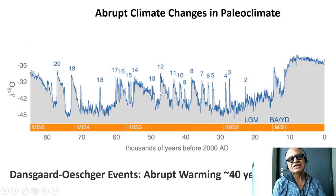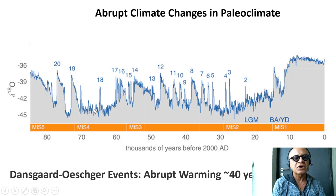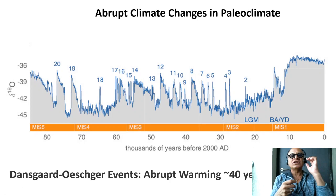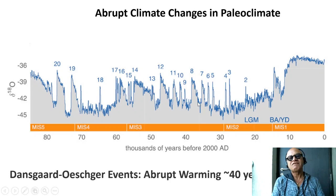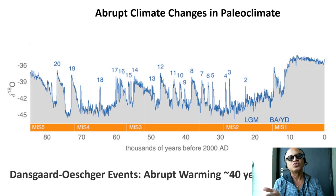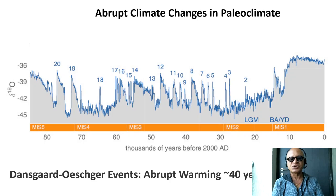These are called millennial oscillations — Dansgaard-Oeschger events. The colder ones among those are called Heinrich events. There is evidence across the world for these in both hemispheres, on land, in the ocean, in coastal ocean, in open ocean, and of course in ice cores. We don't have a very clear explanation for the time scales of these, some of which are multi-decadal to century-long, some are a couple of thousand years, and there was an argument for a 1500-year cycle which is now rejected.